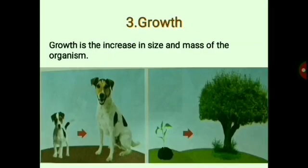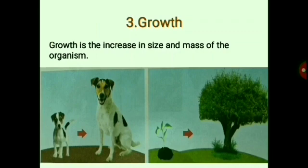Our third characteristic is growth. All living things grow — whether plants or animals, they keep growing and changing all the time. As you are seeing in this picture, a puppy grows into an adult dog, and a baby plant becomes an adult tree.